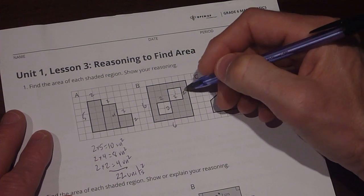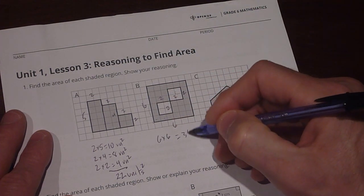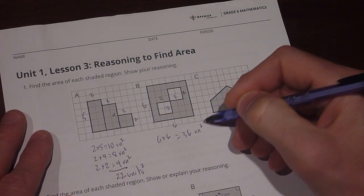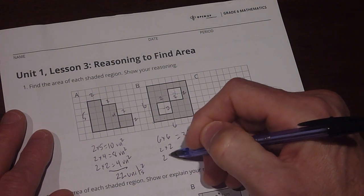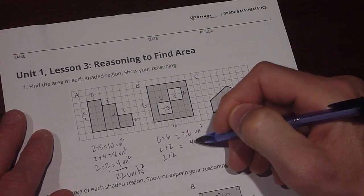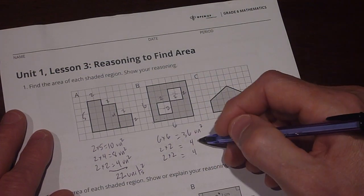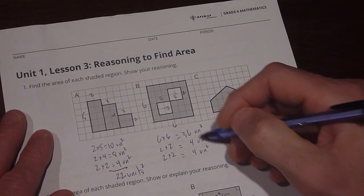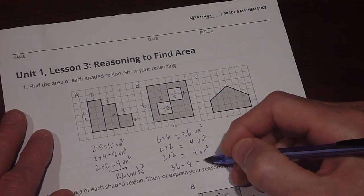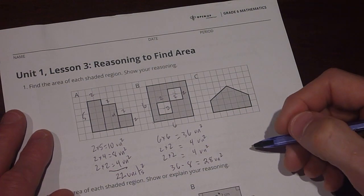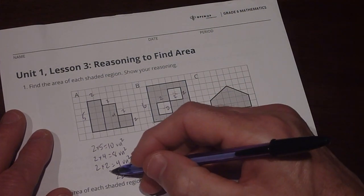So if I take the area of the outer square, which is 6 times 6, which equals 36 units squared, and then I subtract these two. So I have one that's 2 times 2, and another one that's 2 times 2. That equals 4 and 4 also. So a total of 8 that I'm subtracting away from the 36. So 36 minus 8 is going to give me 28 units squared for figure B.